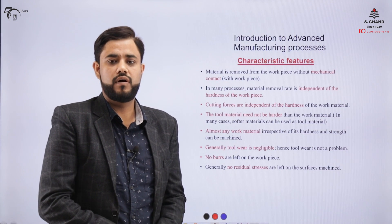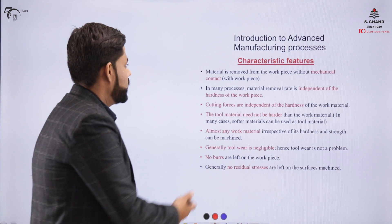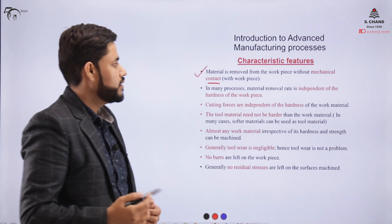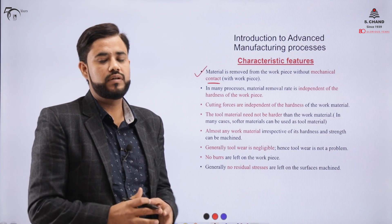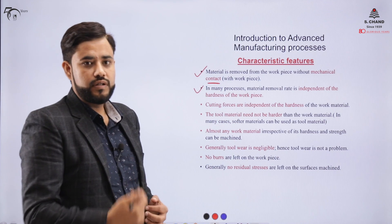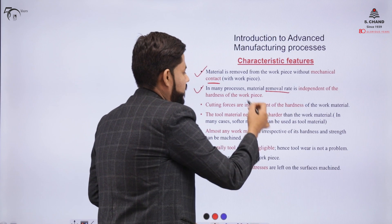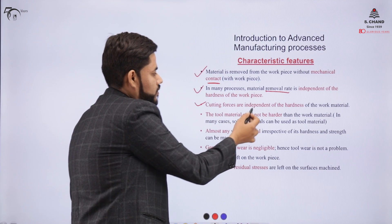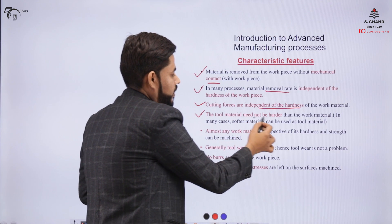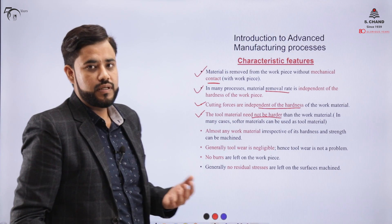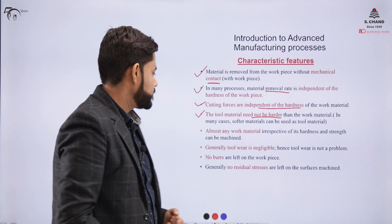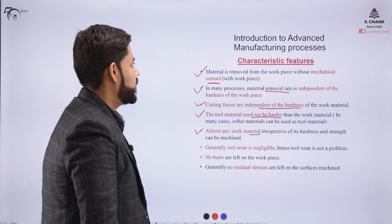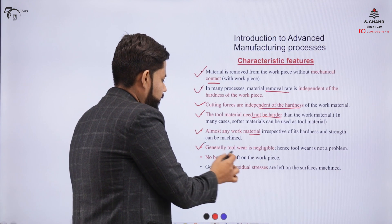Let us look at the characteristics of advanced manufacturing processes. The first characteristic is that there is no mechanical contact between the workpiece and the tool — both do not come in contact with each other in the majority of non-conventional processes. The material removal rate is independent of hardness, so we can machine materials of any hardness, and the tool material need not be harder, as is required in conventional manufacturing processes.